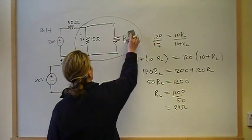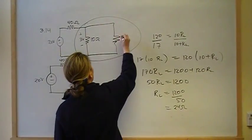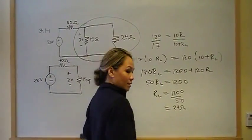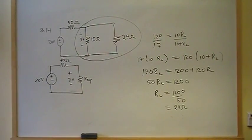So, that's the answer to this problem. RL is equal to 24 ohms. And we solved it using voltage division. Let me know if you have questions.